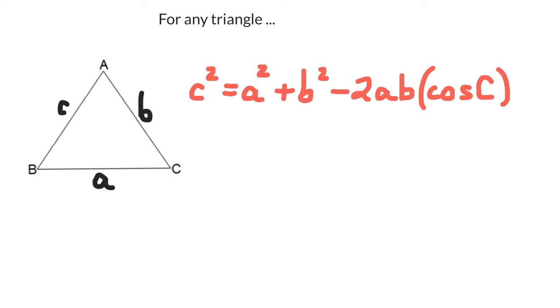Remember, the letters that we're using are just arbitrary labels. The key is to remember that this side length that you're solving for and this angle that you're taking the cosine of, those are opposites.